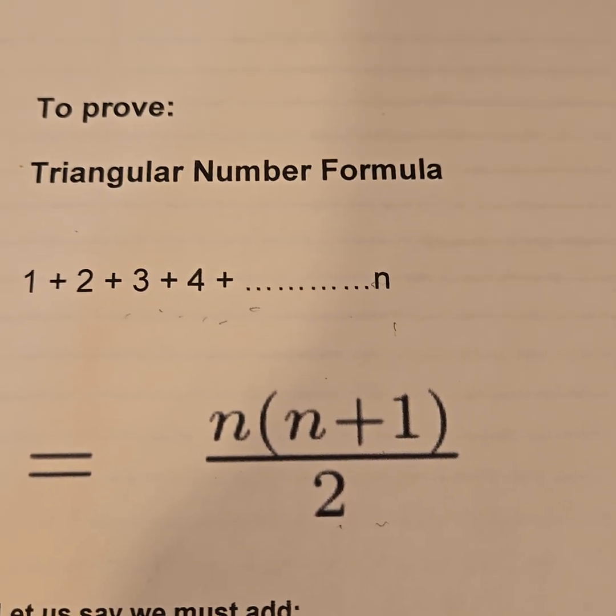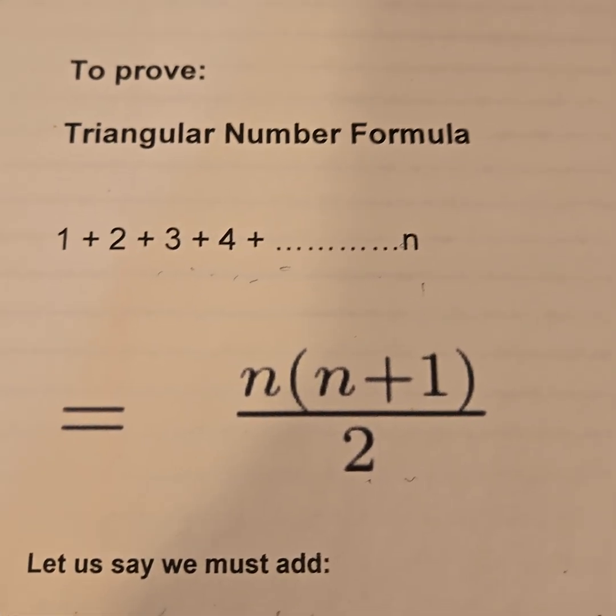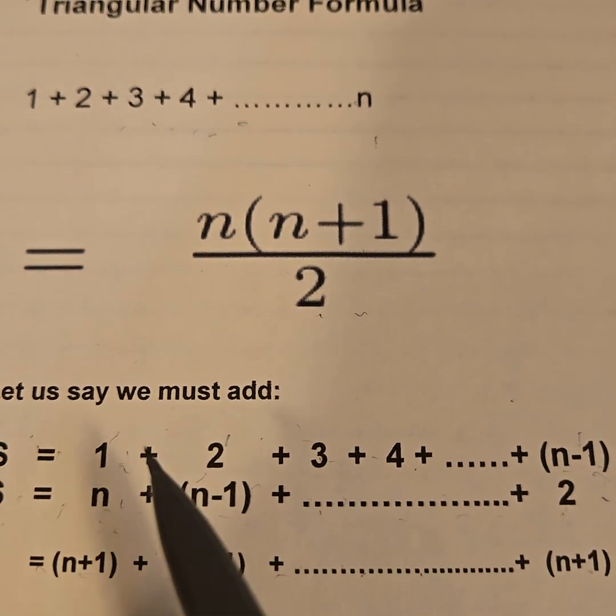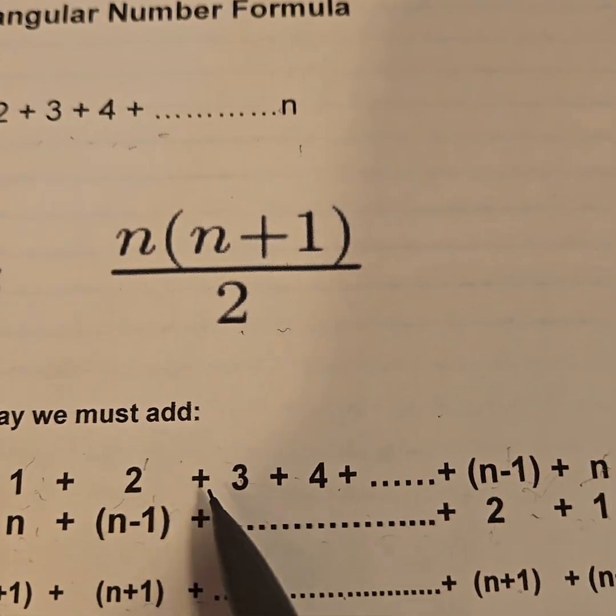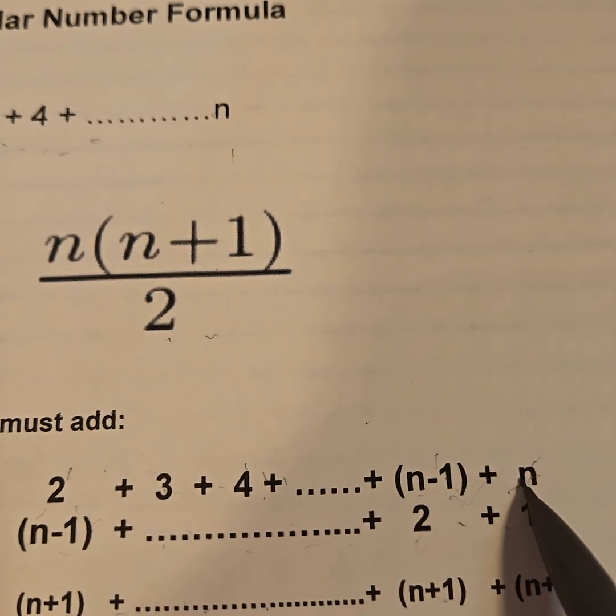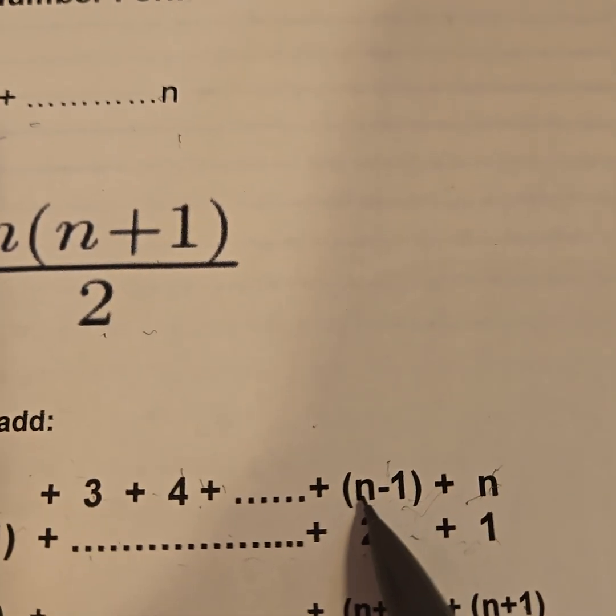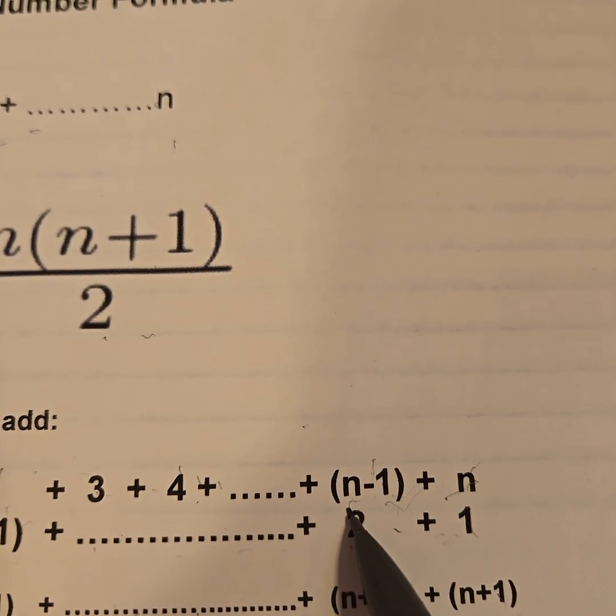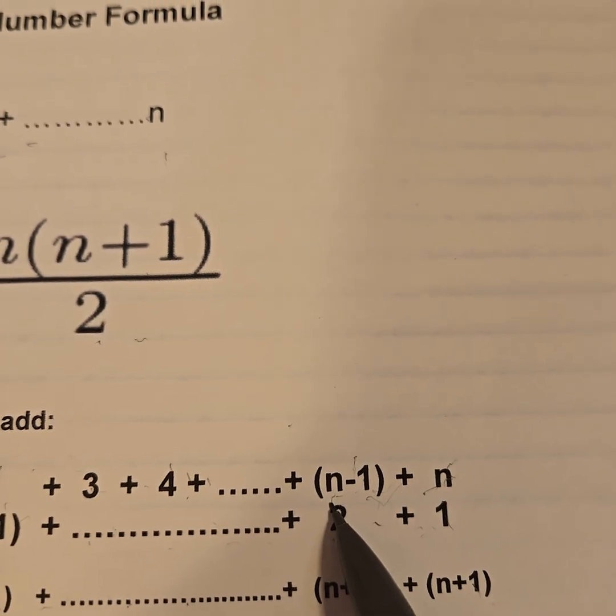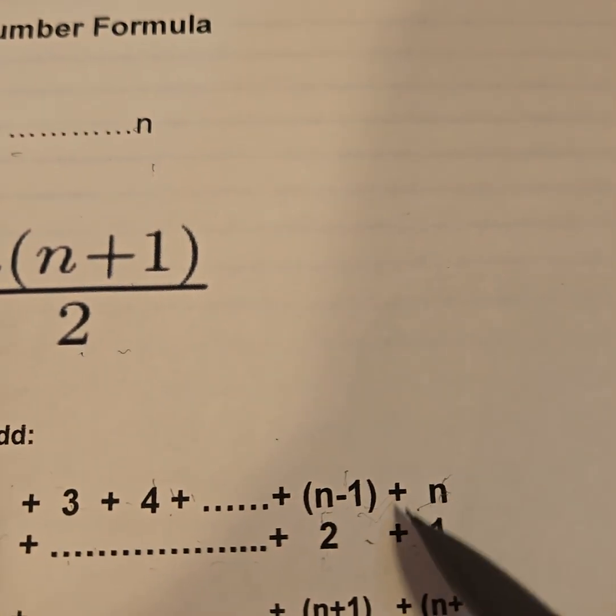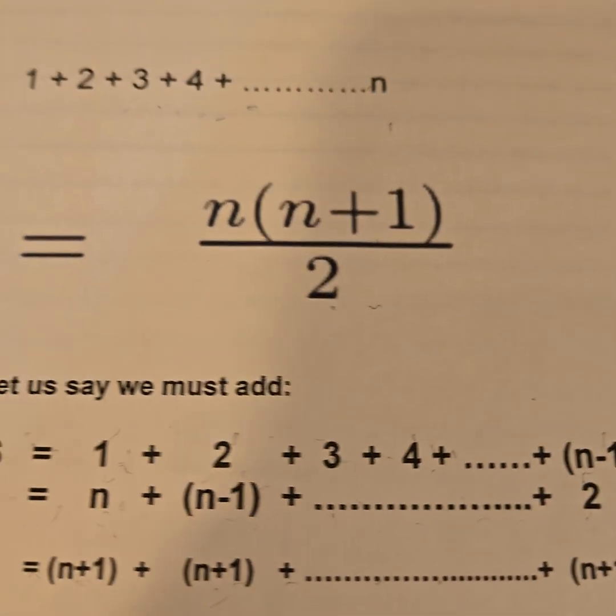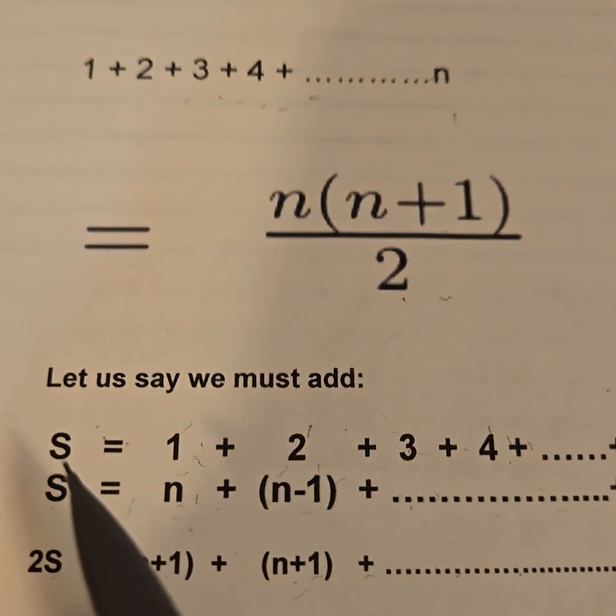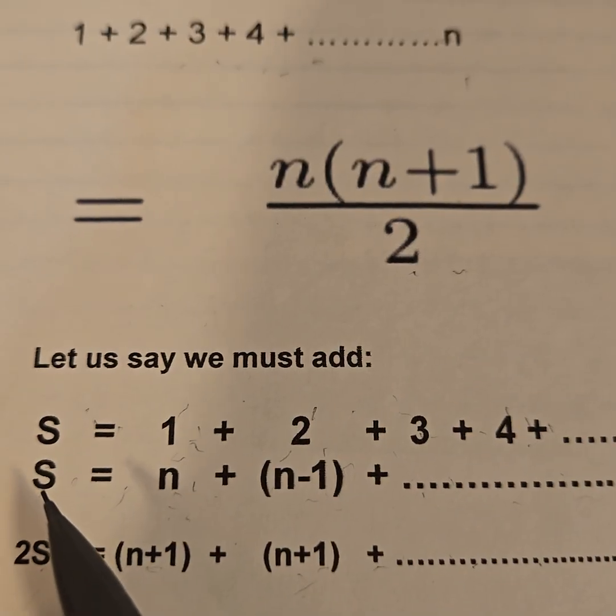So what I'm going to do is to prove it. Let's say I have this number line: 1 + 2 + 3 + ... all the way until n. That means the second last term would be n-1 because it's one less. And of course I'm using a variable because I want to show it's true for any number, any integer that is.